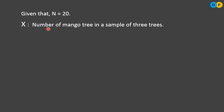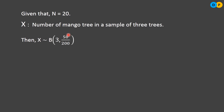X indicates the number of mango trees in a sample of 3 trees. The probability of drawing a mango tree: out of 200 trees, 50 are mango trees, so p = 50/200 = 1/4. Therefore X is a binomial variate with parameters n = 3 and p = 1/4.